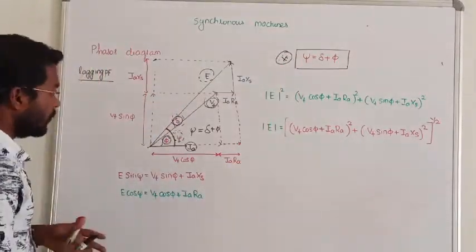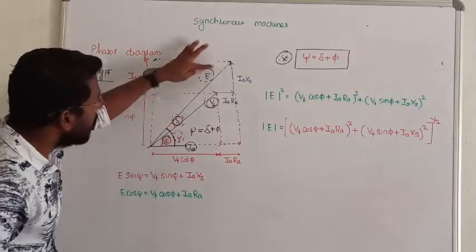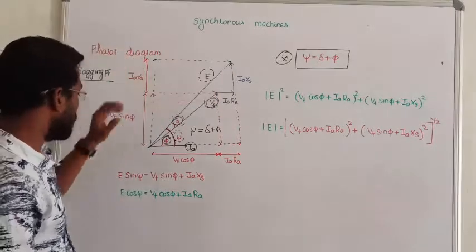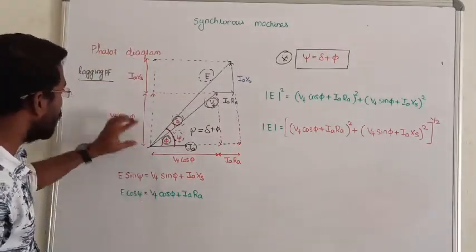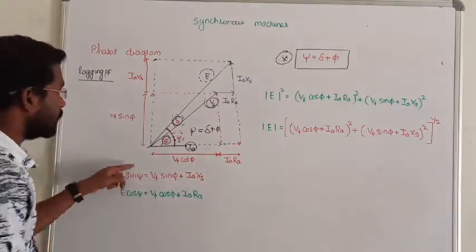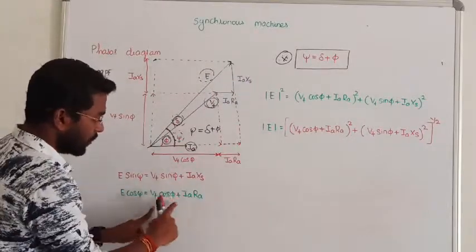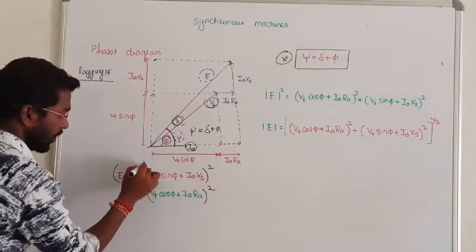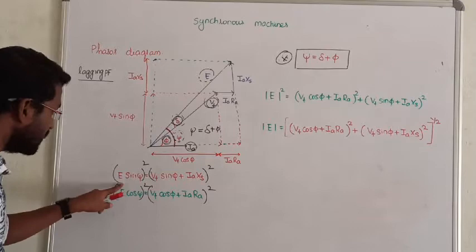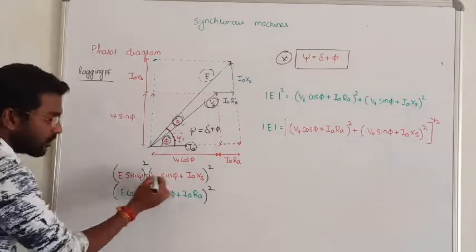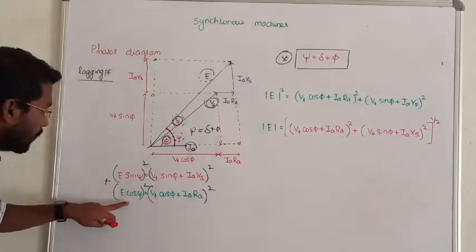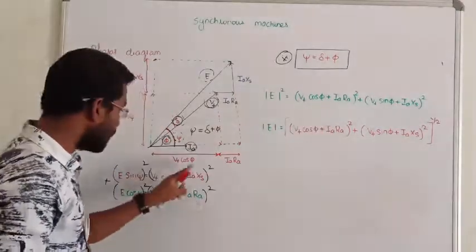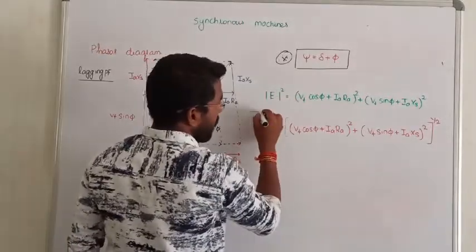Next, we are going to look at the induced EMF equation from the phasor diagram. Working to vertical and parallel with VT. E squared is equal to the whole quantity squared — VT cosine phi plus IaRa, the whole square, plus VT sine phi plus IaXs, the whole square. Expanding: e squared equals the terms with sin squared plus cos squared theta, which becomes 1. So from this, the magnitude of the induced voltage squared equals the square root expression.